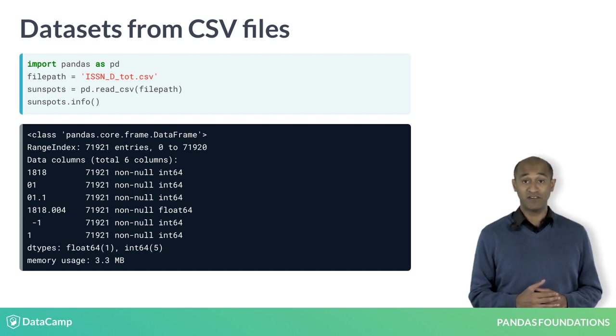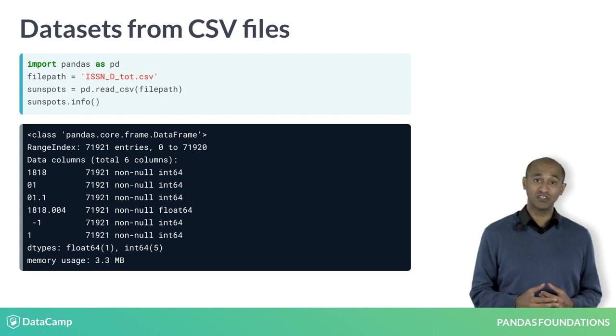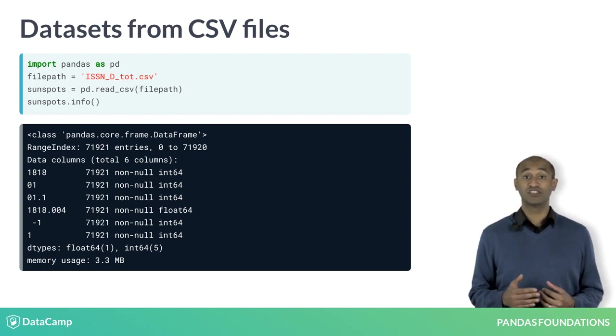Using the info method, we see the dataframe has mostly integer or floating-point entries. Notice the index of the dataframe, the row labels, are of type range index, that is just integers.